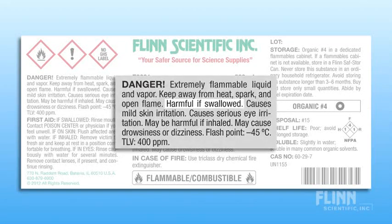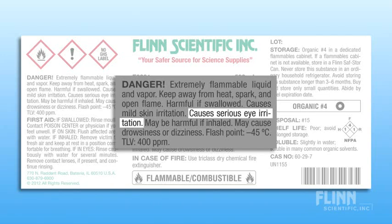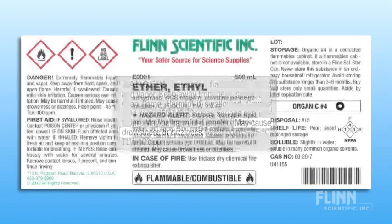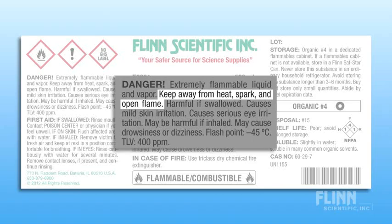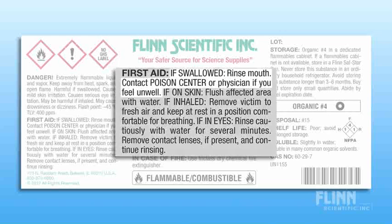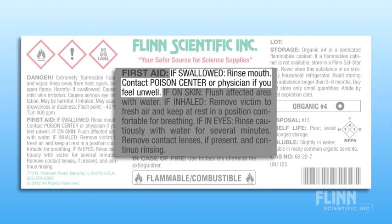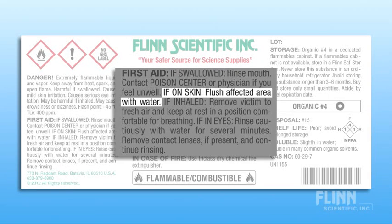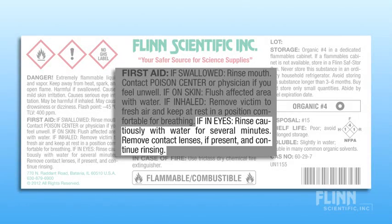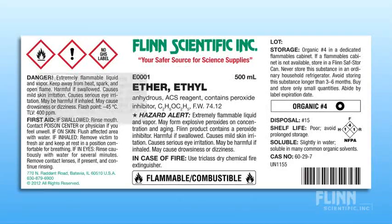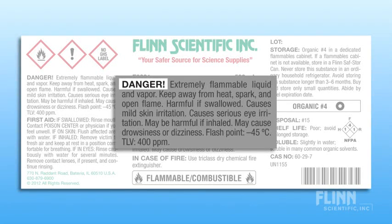Ethyl ether also has health hazards based on its LD50 value and its LC50, which is the inhalation hazard. Those health hazard statements include harmful if swallowed, causes mild skin irritation, causes serious eye irritation, may be harmful if inhaled, and may cause drowsiness or dizziness. The precautionary statements associated with these hazard statements include keep away from heat, sparks, and open flame, and the various first aid statements: if swallowed, rinse mouth and contact poison control center or a physician if you feel unwell; if on skin, flush affected area with water; if inhaled, remove to fresh air and keep at rest; if in eyes, rinse cautiously with water, remove contact lenses if present, and continue rinsing. The signal word for ethyl ether is danger, determined based on the specific hazard category — in this case, extremely flammable liquid and vapor.